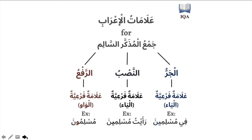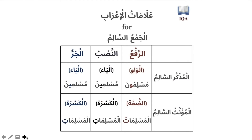To summarize the Jama' Al-Salim — the sound plural — in Arabic, we have two types: the sound masculine plural and the sound feminine plural. Both of these take secondary signs of I'rab.